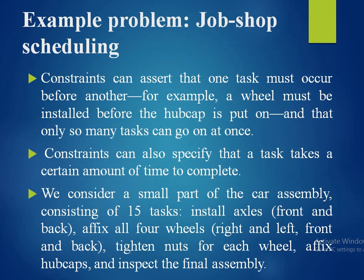Constraints can assert that one task must occur before another — for example, a wheel must be installed before the hubcap is put on — and that only so many tasks go on at once. Constraints can also specify that a task takes a certain amount of time to complete. We consider a small part of a car assembly consisting of 15 tasks: install axle front and back, affix all 4 wheels, tighten nuts for each wheel, affix hubcaps, and inspect the final assembly.